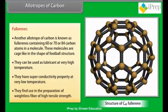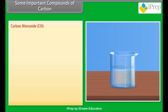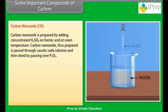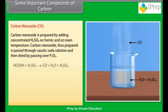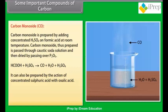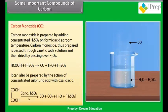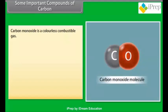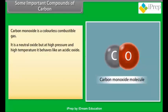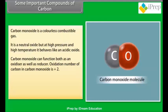Some important compounds of carbon. Carbon monoxide: carbon monoxide is prepared by adding concentrated H2SO4 on formic acid at room temperature. Carbon monoxide thus prepared is passed through caustic soda solution and then dried by passing over P2O5. It can also be prepared by the action of concentrated sulfuric acid with oxalic acid. Carbon monoxide is a colorless combustible gas. It is a neutral oxide but at high pressure and high temperature, it behaves like an acidic oxide. Carbon monoxide can function both as an oxidizer as well as reducer. Oxidation number of carbon in carbon monoxide is +2.